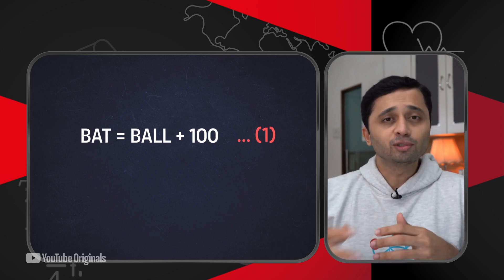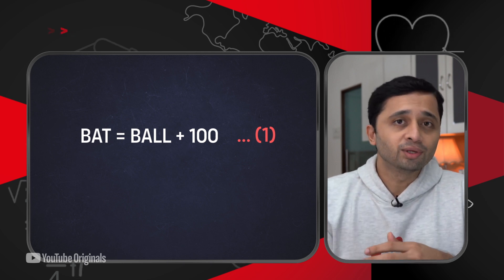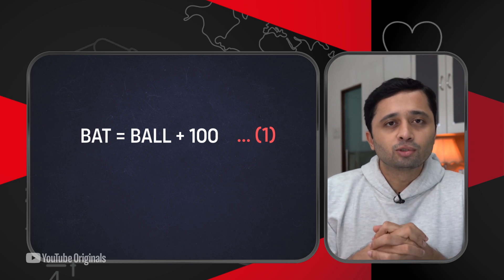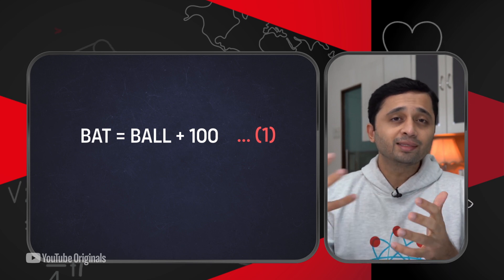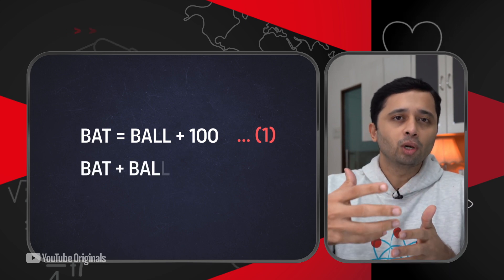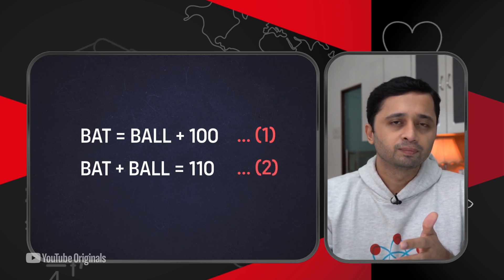We have also been told that the bat and the ball together cost 110 rupees. So we can write the second equation as: bat plus ball equals 110 rupees.